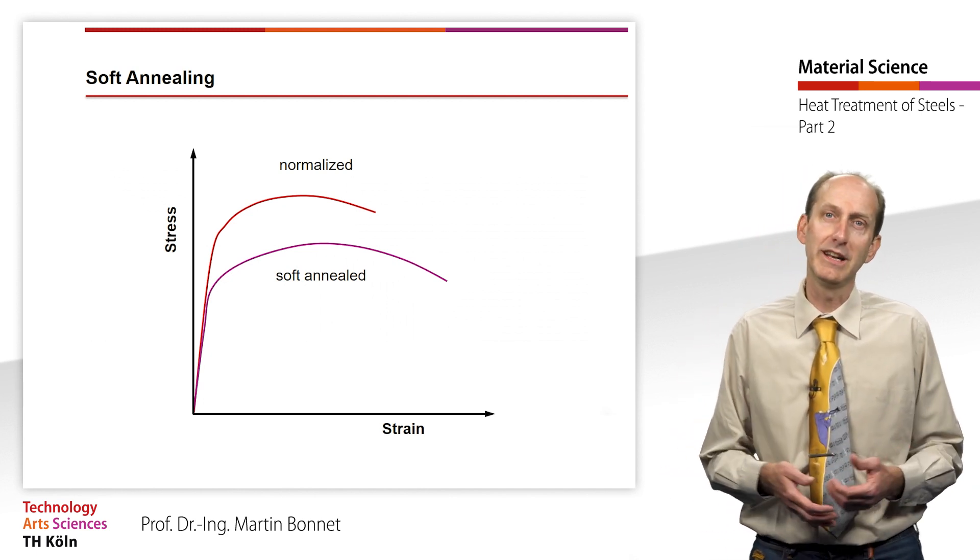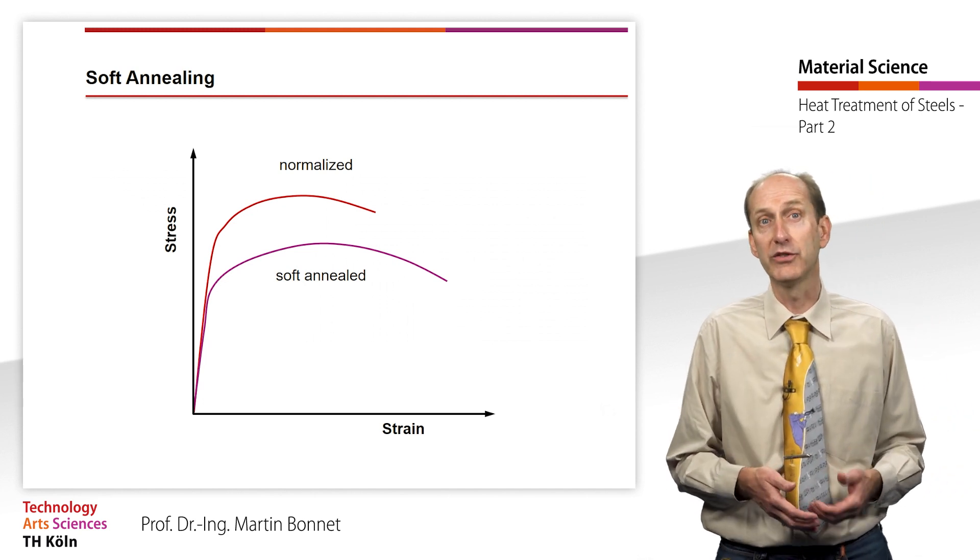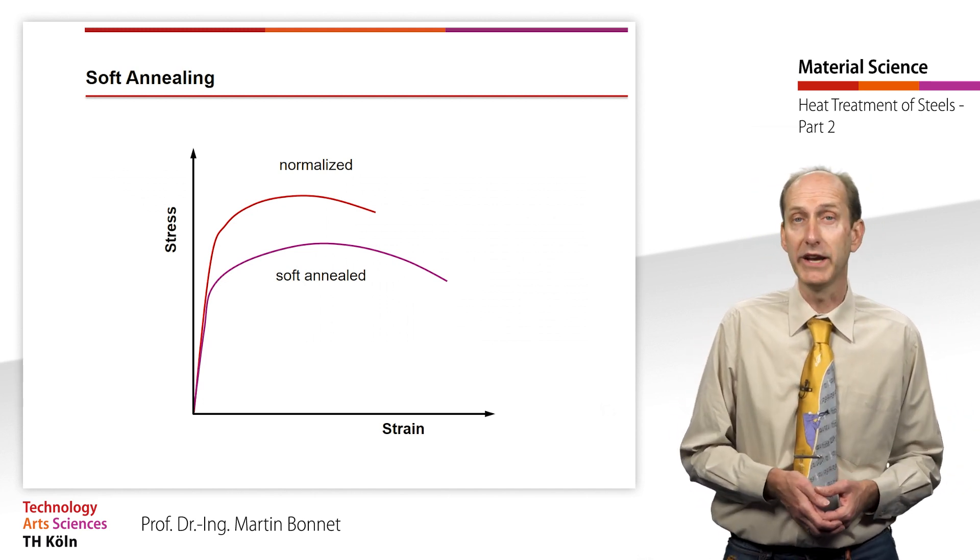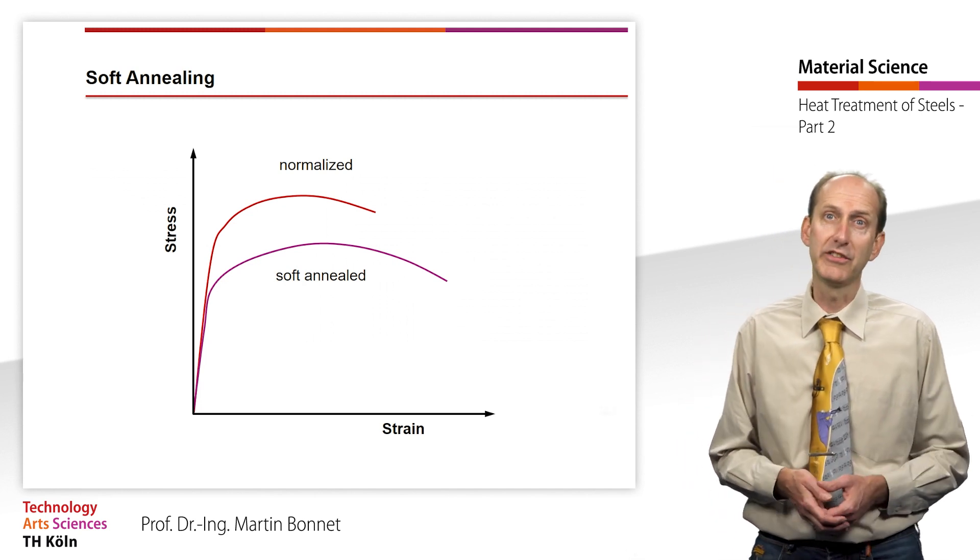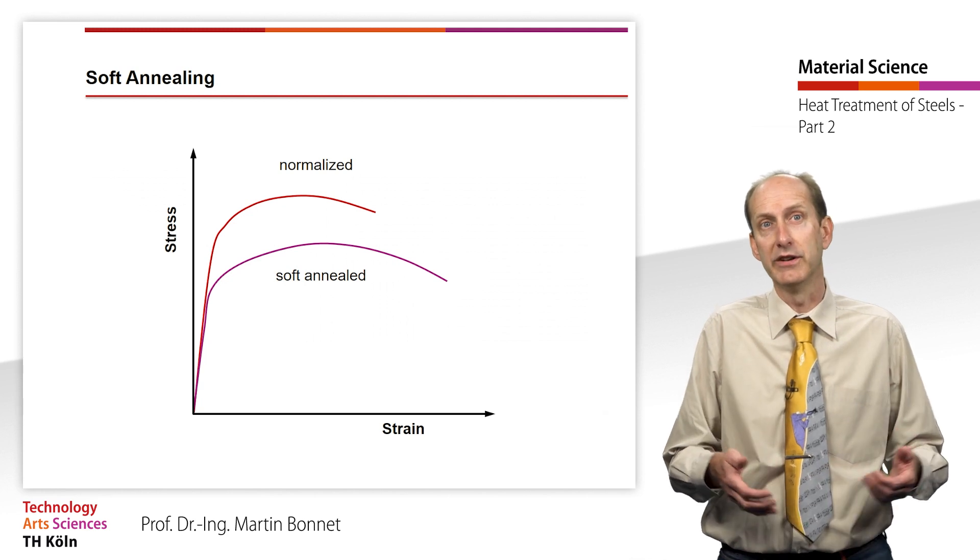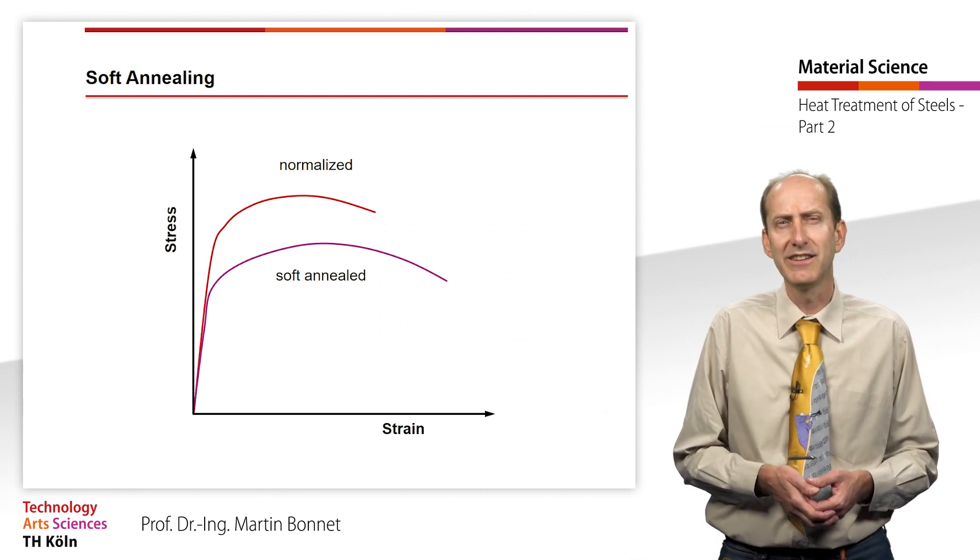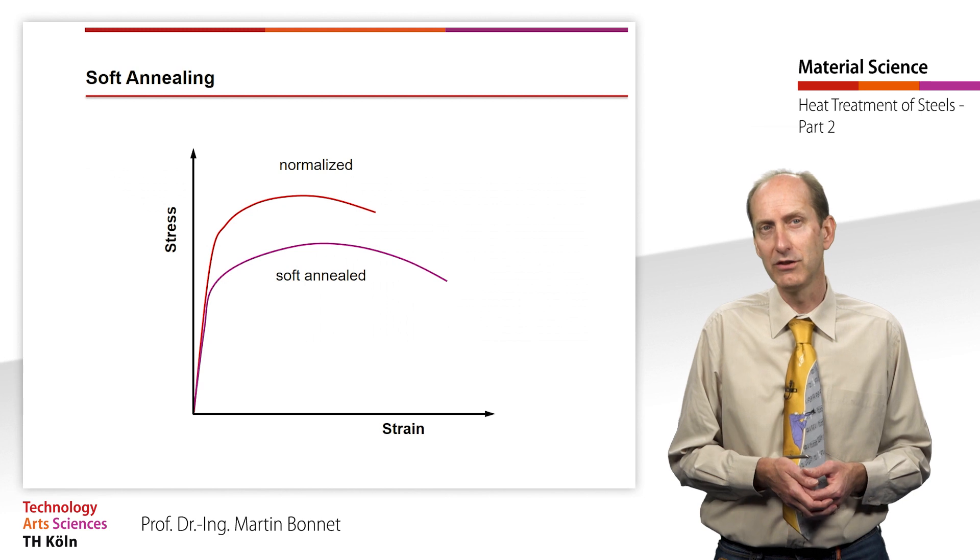Soft annealing is therefore mainly used for steel with a carbon content of greater than 0.5%. Low carbon steel becomes so soft as a result of the annealing treatment that they tend to smear, especially during drilling.